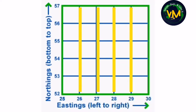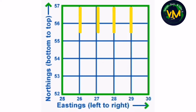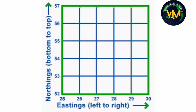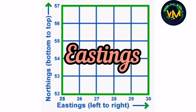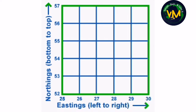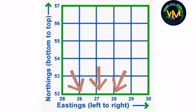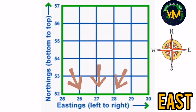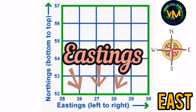Now, the lines that are drawn vertically — that is, from north to south — are called eastings. How to remember these eastings? These numbers increase eastward from the origin, that is, the numbers are increasing towards the east, and so we call them eastings.